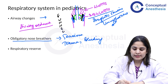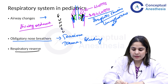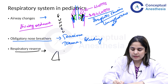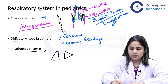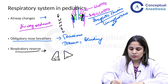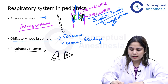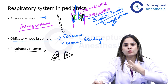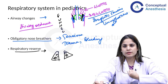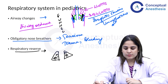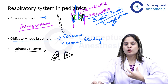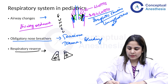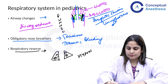Next is respiratory reserve. The lung size in children is very small, so they do not store much oxygen. As a result, they have limited respiratory reserve, making it difficult for them to compensate during periods of hypoxia.